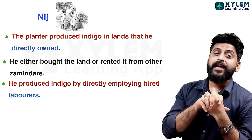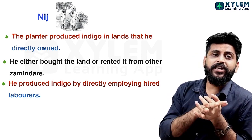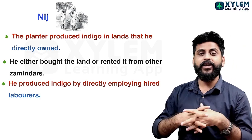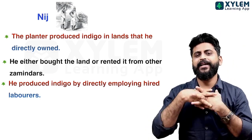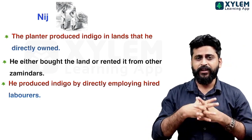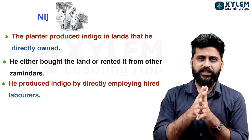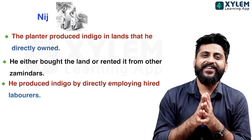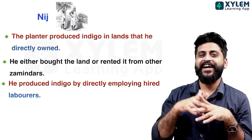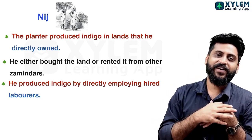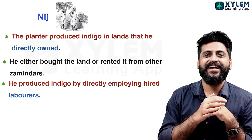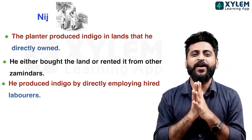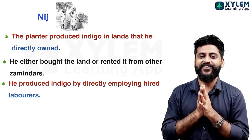Then he produced Indigo by directly employing hired laborers on this land. These are the Niche Cultivation features — three points in total. This is the complete overview of Niche Cultivation features.